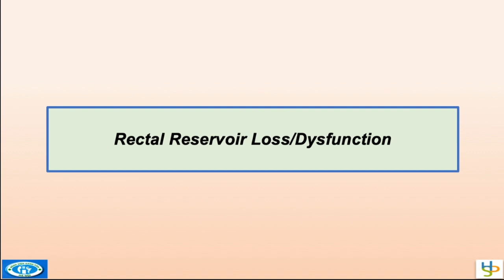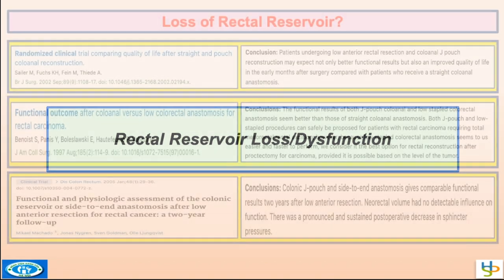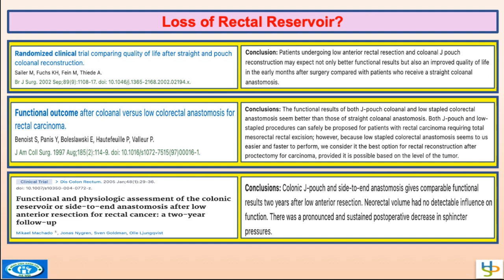First group: rectal reservoir loss or dysfunction. When we resect the rectum, we lose the physiologic reservoir. Many papers show that after low anterior resection and total mesorectal excision with low colorectal or coloanal anastomosis, we can improve the quality of continence by constructing a colonic reservoir to improve the volume of the distal neorectum and facilitate continence.